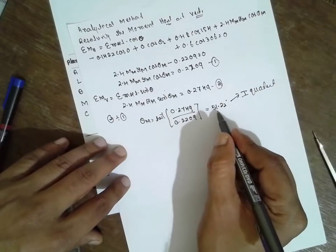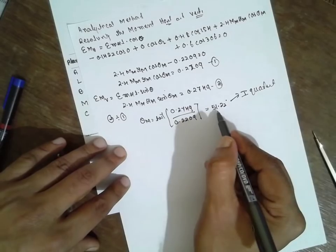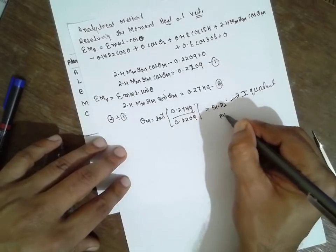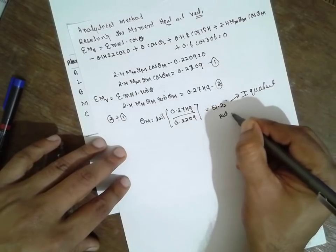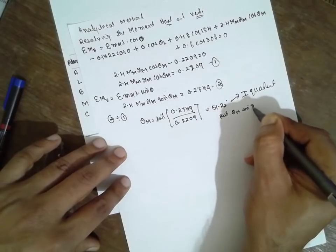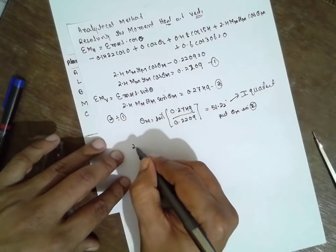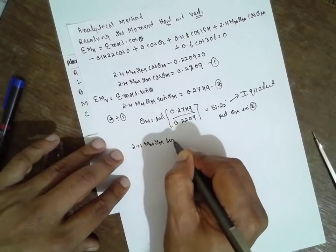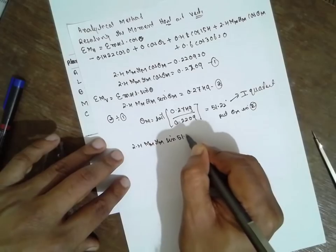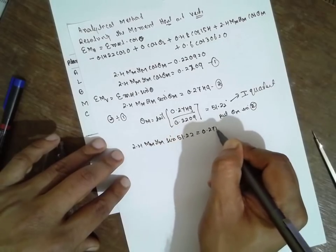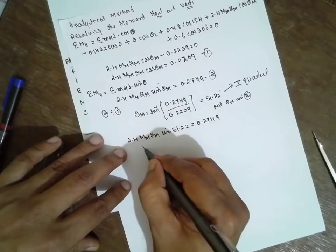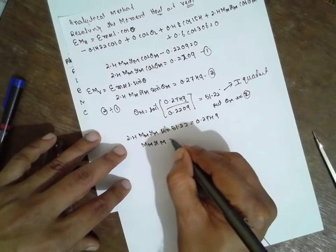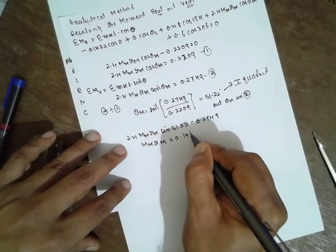Now we got the theta value. Substitute the theta value in equation 2. Put theta M in 2: 2.4 MM RM sin 51.22 equals 0.2749. Therefore, MM RM equals 0.146, equation 3.